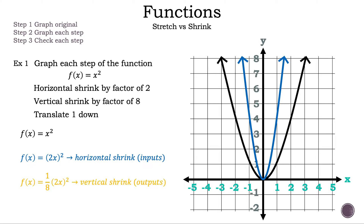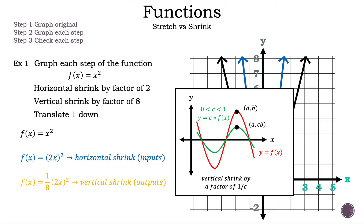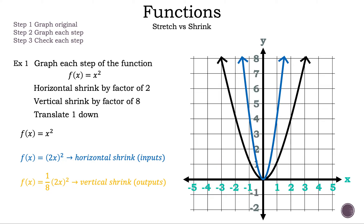Now let's move on to the next step by writing down f(x) = (1/8)(2x)². Why is it 1/8 and not 8? Let's bring back the vertical shrink diagram. It says a vertical shrink by a factor of 1/c, and c is 1/8. So 1 over c becomes 1 over 1/8, which becomes 8. That is why our c value is 1/8 and not 8 — when we shrink the graph, we have to flip the factor. Now let's graph f(x) = (1/8)(2x)². The 1/8 affects the output, so the results will happen slower and the graph is going to push down vertically or shrink vertically.